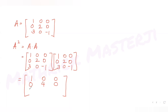For the third row: 3 into 0 plus 0 minus 3, so three minus three gives 0. Then the third row second column: 3 into 0 plus 0 into 2 plus (-1) into 0 gives 0. And 3 into 0 plus 0 plus (-1) into (-1) gives plus 1. So A squared equals 1 0 0 / 0 4 0 / 0 0 1.